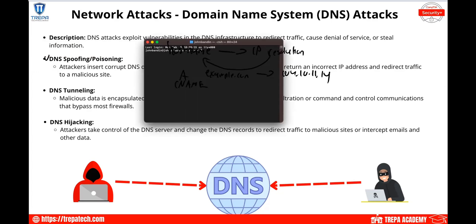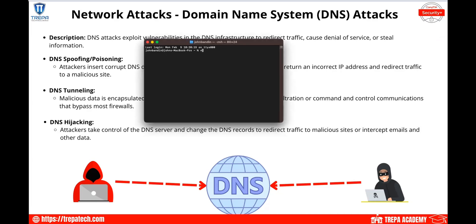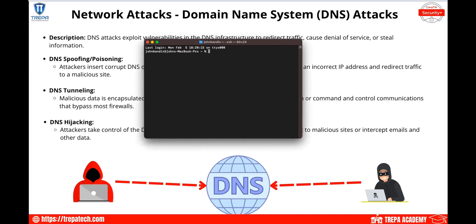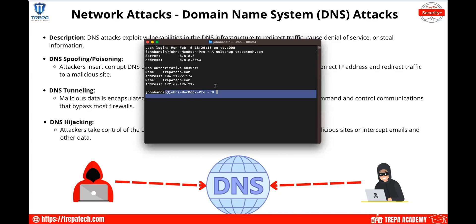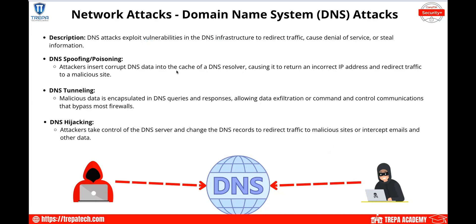To see this in real time, we can open up a terminal and use the nslookup command. For example, running nslookup trepatech.com shows the global DNS records — pointing to Google's 8.8.8.8 — and reveals that trepatech.com resolves to two IP addresses. This would be an A record.